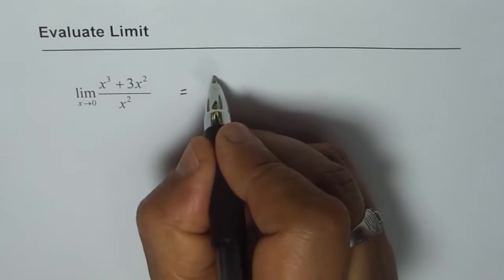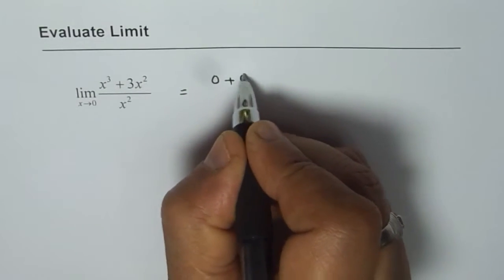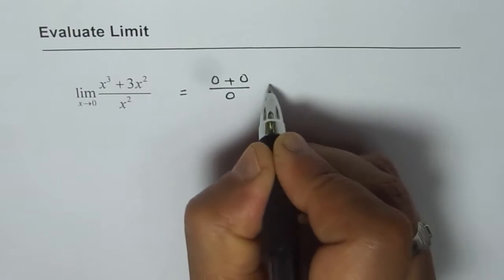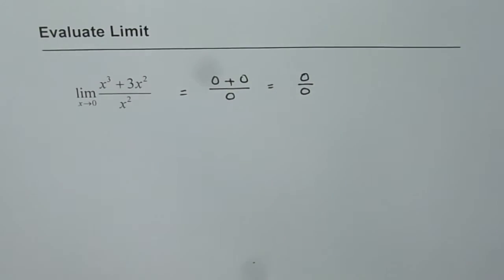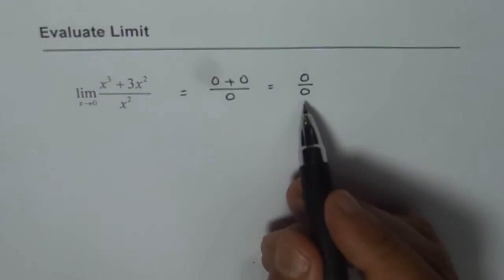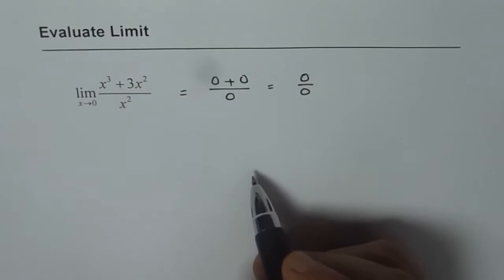If I substitute 0, I get 0 plus 3 times 0 is 0 over 0, which is of the form 0 over 0, right? So that is meaningless. It doesn't help.